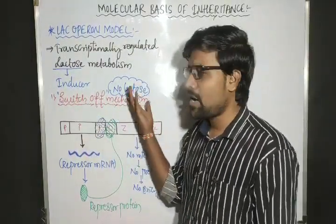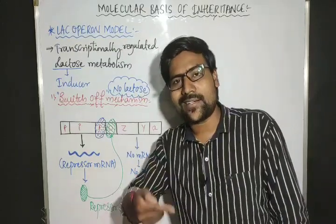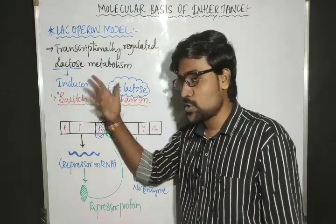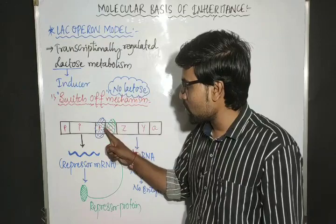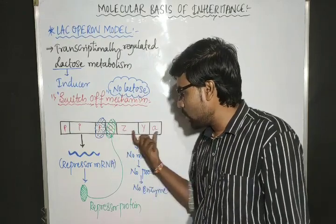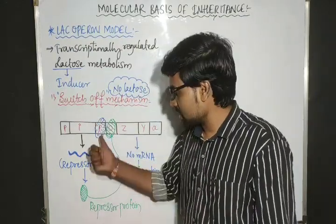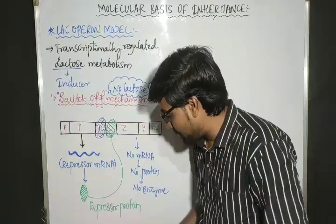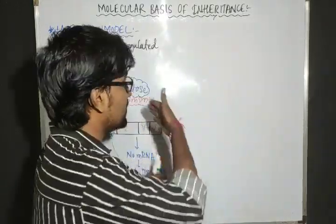If there is no production of enzymes, the whole mechanism is switched off. The mechanism switches off because there is no lactose — no food — hence no digestive enzymes are produced. When there is no inducer (lactose), the whole mechanism shuts down. The operator gene controls the whole process, and it is blocked by the repressor protein produced by the regulator gene.